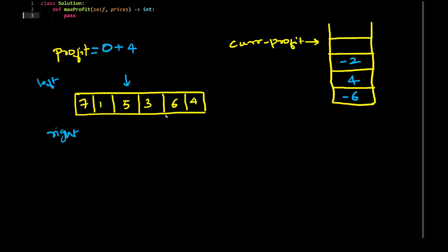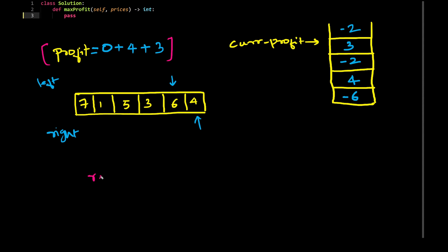Again, move the pointers to the right. Look at the value of the right pointer minus the value of the left pointer — that's 6 minus 3, which is 3. I will add this value to the profit. Then continue moving the right pointer and left pointer. The current profit is now 4 minus 6, which is negative 2. I will not add it. Whatever value you're left with at the end, simply return the profit. In this situation, the profit is equal to 7.